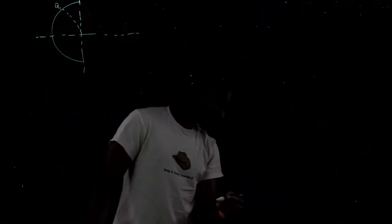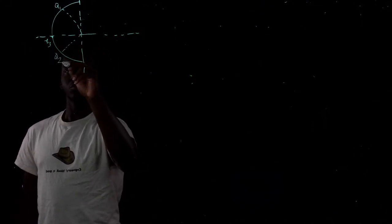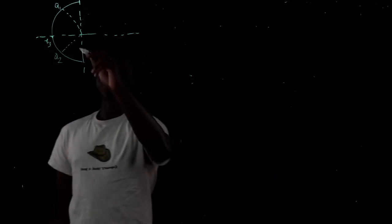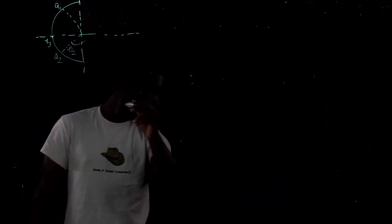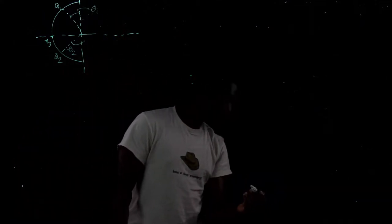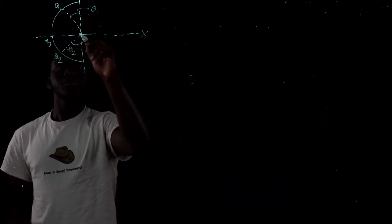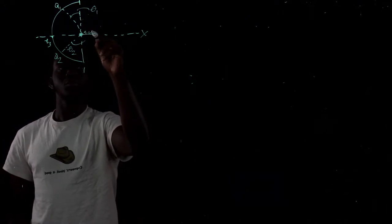We have a semicircle: q1 is up here, negative q3 is on the x-axis, and q2 is on the other side. Theta 2 and theta 1 are the respective angles from the x-axis, and we're trying to find the force on q4 located at the center.